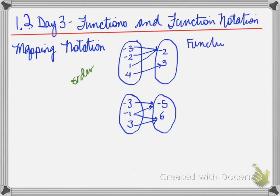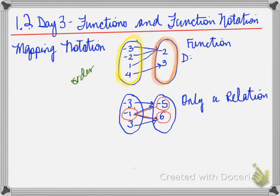So repeat again, the first one is a function because for every x there is only one y. The second one is only a relation because the negative one maps onto two y values. And because of that, it is not a function. It is only a relation.